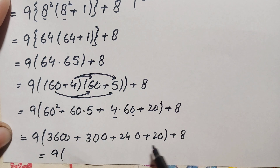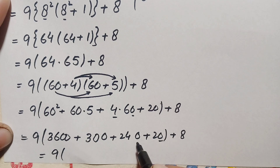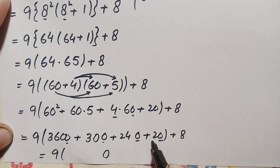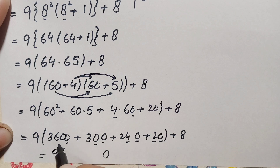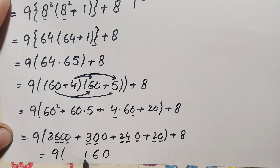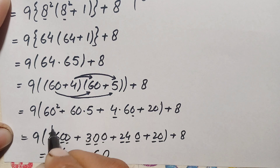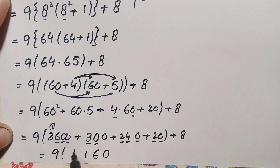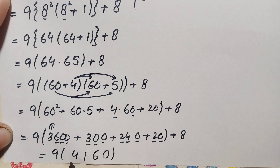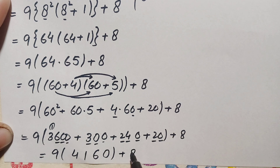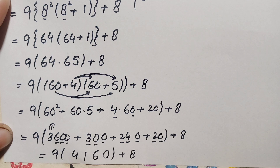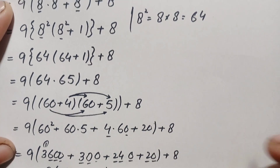Now we add these four numbers starting from the ones position: 0 plus 0 plus 0 plus 0 is 0; 2 plus 4 is 6, plus 0 plus 0 is 6; 2 plus 3 is 5, plus 6 is 11 — write 1, carry 1; 3 plus 1 carried is 4. So the sum of these four numbers is 4160. Then we add a, giving 9 times 4160, plus 8.